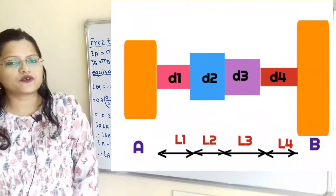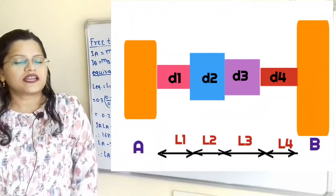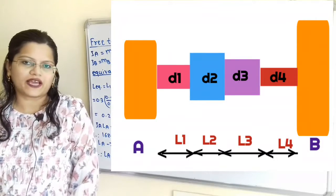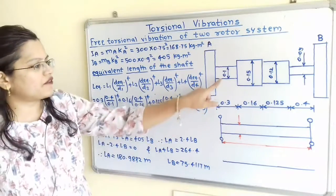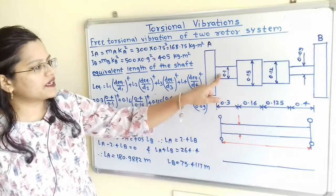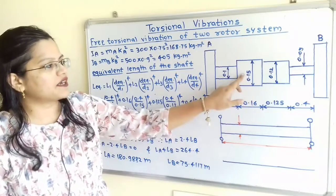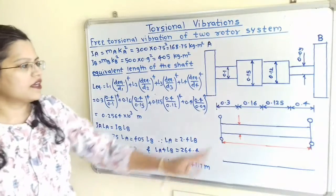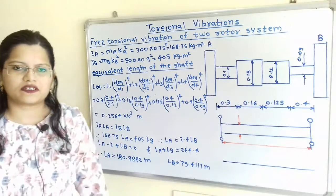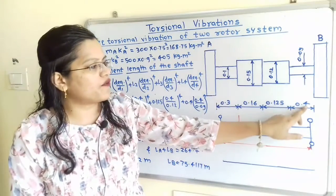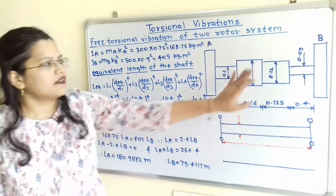In this question, there are two rotors connected with the help of a shaft with different lengths and different diameters. Let us understand the question with the help of a diagram. We have rotor A, then the first section of the shaft of length L1 = 0.3 m with diameter D1 = 0.1 m. Then the second section is of length L2 = 0.16 m and diameter D2 = 0.15 m. Then the third section of length L3 = 0.125 m and D3 = 0.12 m. The fourth and last section is L4 = 0.4 m with D4 = 0.09 m, and then rotor B.